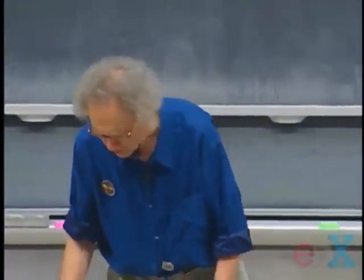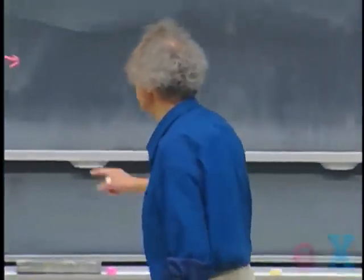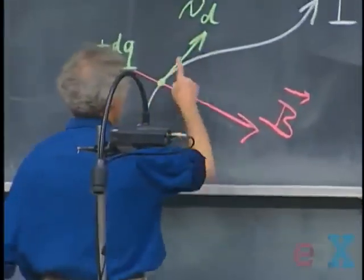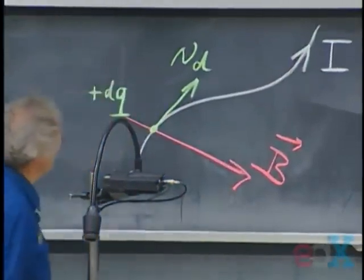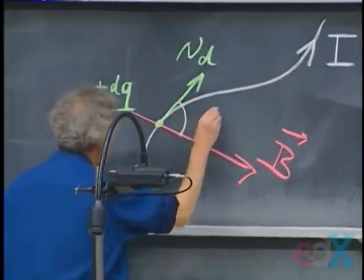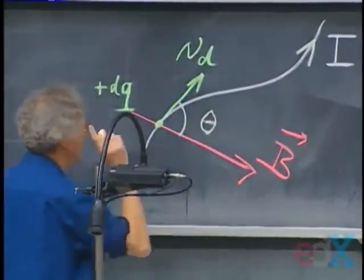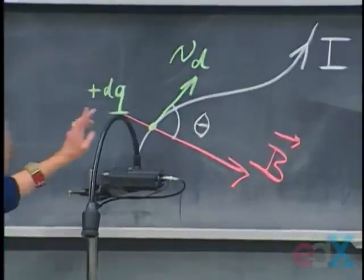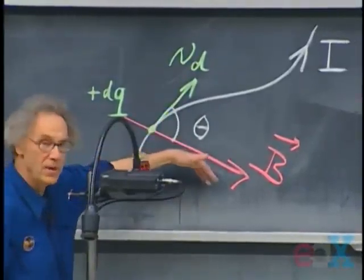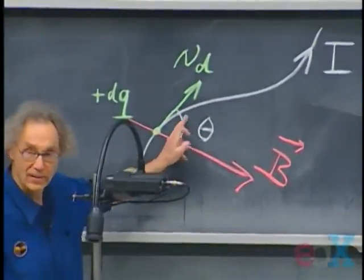So let's have this charge DQ that moves in this direction. And so that gives me a current. And let this angle be theta between them. Theta is going to be important because it's a cross product between velocity and B. That means the sine of this theta comes in later.